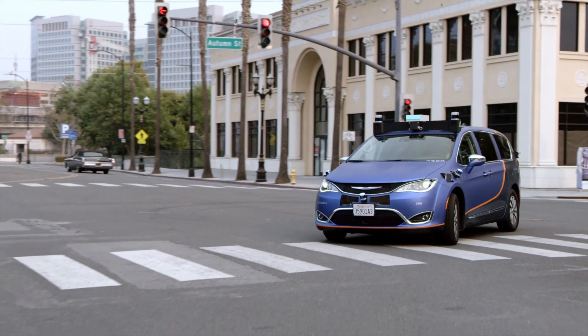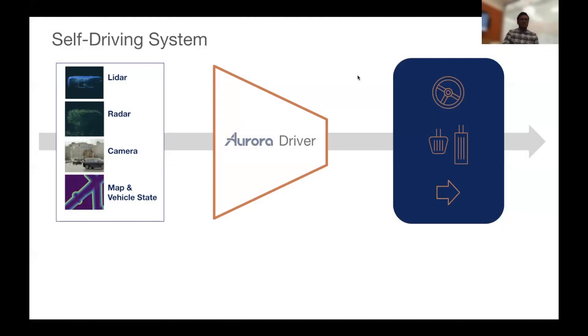So what really is it that makes the Aurora driver the Aurora driver? The Aurora driver, like other self-driving systems, takes a bunch of inputs on the left-hand side to produce three outputs on the right. It takes inputs as lidars, radars, cameras, map and vehicle state information, such as brake lights and vehicle odometry. And it effectively does a giant compression to move these into steering, throttle and brake, and turn signals so that we can show our intent to other actors in the world.